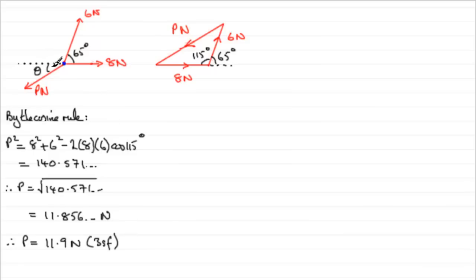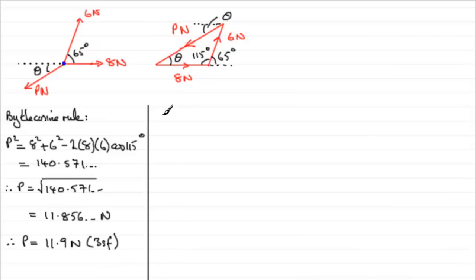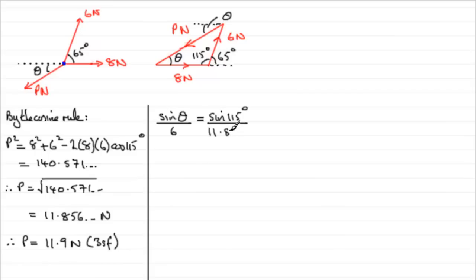Now, as for angle theta — where does that appear in the triangle? If I think of the dotted line through there, that's theta, but it's not directly in the triangle. However, it's equivalent to the corresponding angle down in the triangle because we've got alternate angles with two parallel lines. To work out theta, I could use the cosine rule since we know all three sides, but I'm going to use the sine rule because it's quicker. By the sine rule: sine theta over the opposite side (which is 6) equals sine of 115 degrees divided by P, so 11.856.